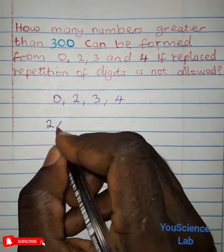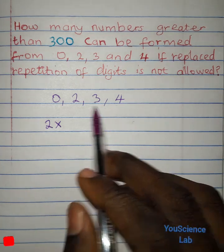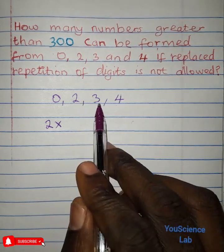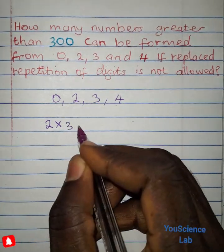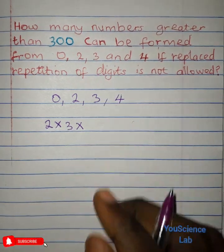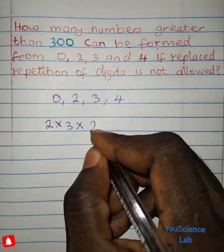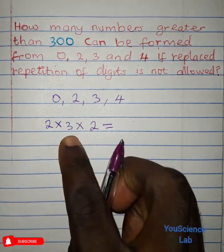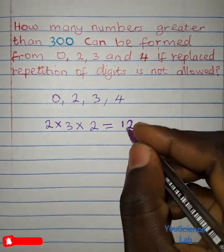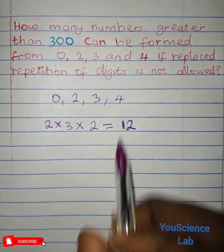So we have 2 times. Then if we pick the first digit we are left with three digits, so any of the three digits can fill into the second position. So we have times 3 times. Now the last digit can be taken from 2 since we have already removed two digits leaving two digits. So we have 2. So we have 2 times 3 that is 6 times 2 that is 12. So we have 12 numbers that are 3 digits which are greater than 300.